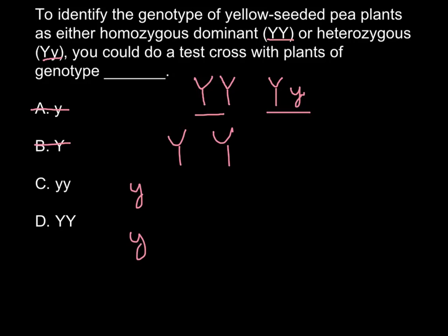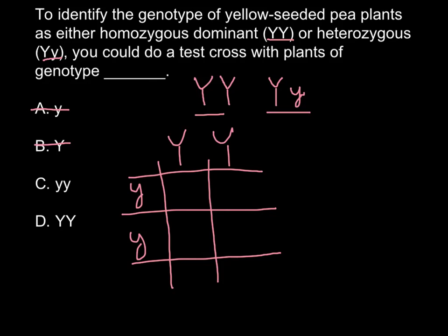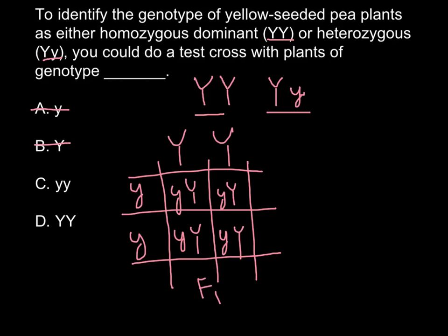For example, here we have capital Y capital Y and small y small y. If we cross homozygous dominant — this is called a test cross — with homozygous recessive, all of our F1 generation will look alike. There is no segregation; the F1 generation would be 100% like the dominant parent. In this case, we know that our parent with the dominant trait is homozygous dominant.